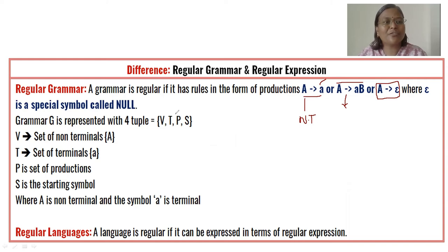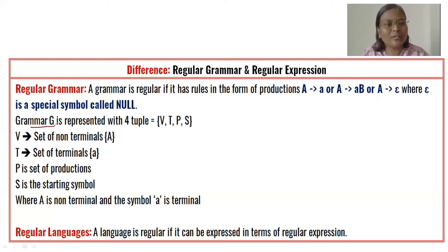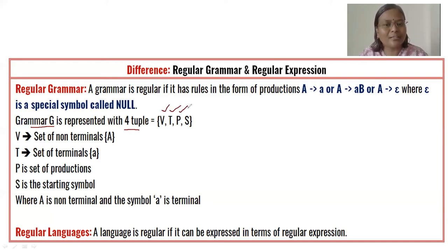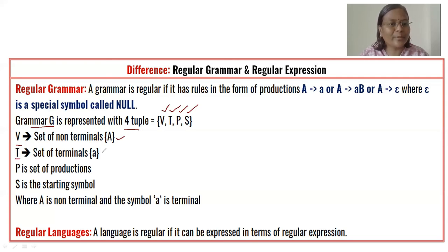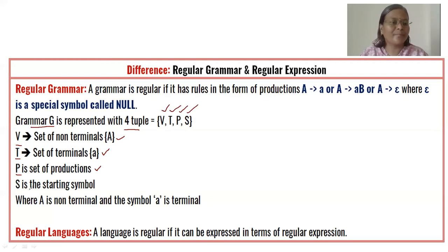Let us see the formal definition of regular grammar. Every grammar in formal language is denoted with the special symbol capital G and consists of a four-tuple — meaning four components. V is the set of non-terminals. T is the set of terminals. P is the set of productions — a grammar can have one or n number of productions. S is the starting symbol.